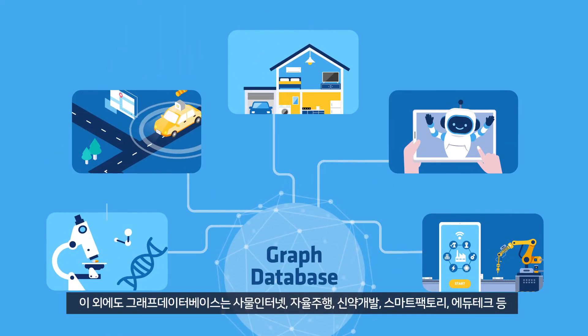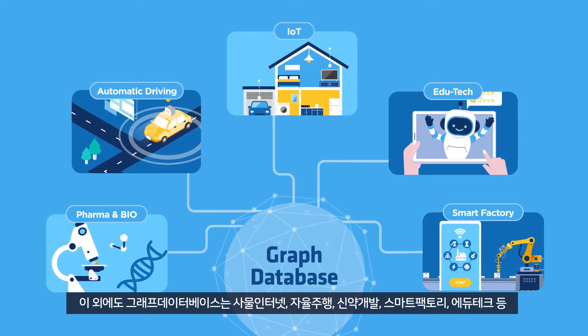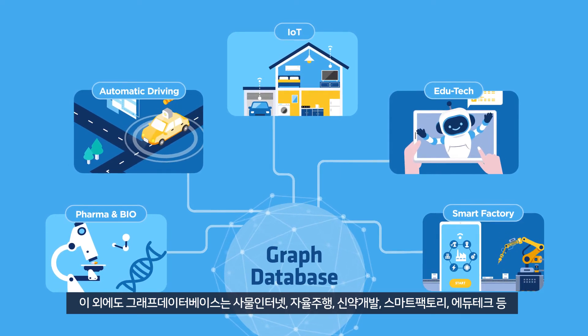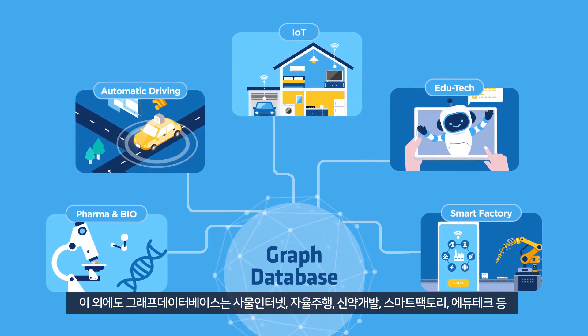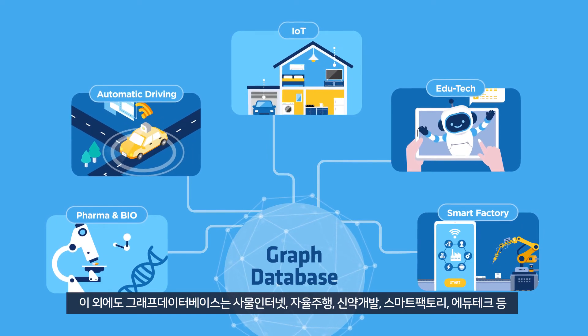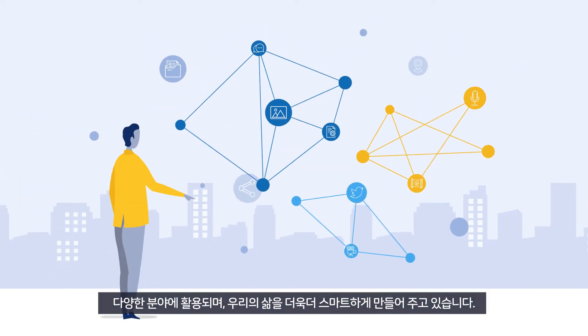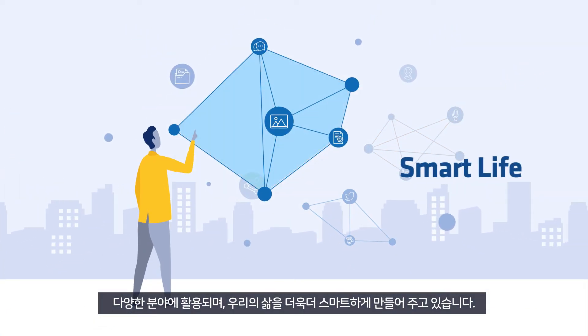The graph database is also used in IoT, autonomous driving, pharma and bio, smart factory, edutech, and many more to make our lives incredibly smarter.